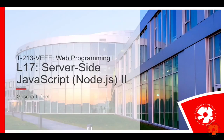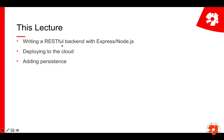Welcome to lecture 17, where we end the server-side JavaScript part, apart from the testing that comes later. Last time we created a RESTful backend and designed the different URLs for our to-do application. We'll now implement this in Express, then deploy it to the cloud, and finally add a bit of persistence with MongoDB.